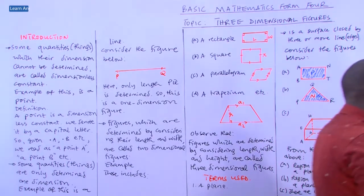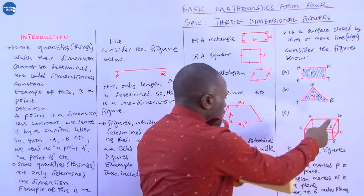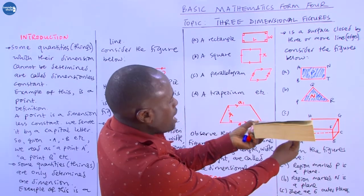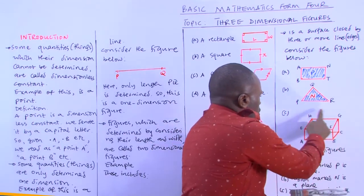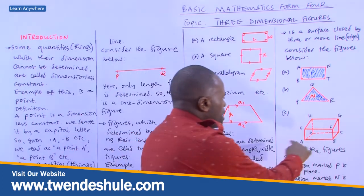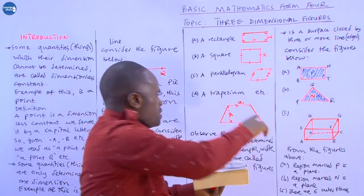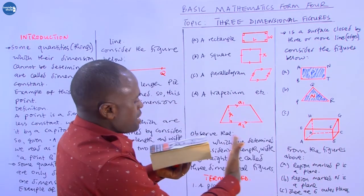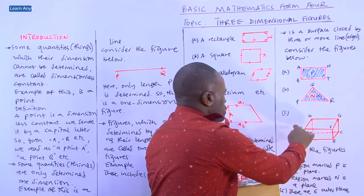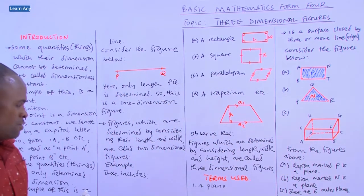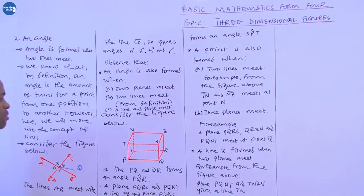Using this prism as a teaching aid: A, B, C, D form the base plane; E, F, G, H form the top plane; ABFE is a side plane; DCGH is the opposite side plane; BCFG is another side plane; and ADHE is the remaining side plane. So there are six outer planes from this shape.